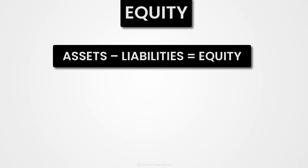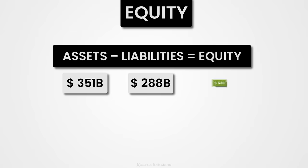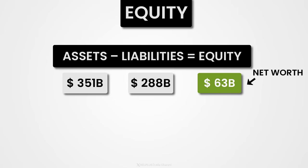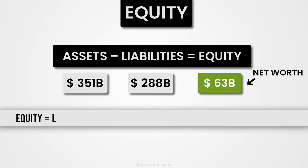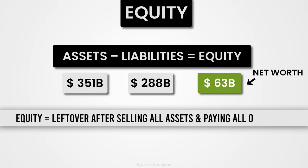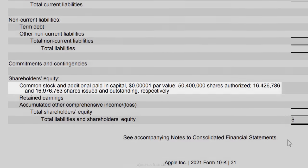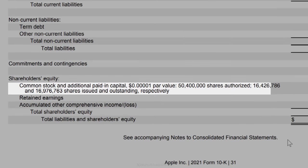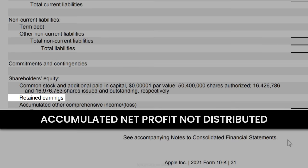Now let's move on to equity. It's important to understand that equity on its own doesn't really exist — it's the difference between assets and liabilities. In Apple's case, that's $351 billion in assets minus $288 billion in liabilities, which equals $63 billion in equity. This is Apple's net worth that belongs to the owners — what would be left if Apple sold all its assets and paid back all its debt. Equity mainly consists of money invested by the owners (common stock) and retained earnings — the net income accumulated over time that wasn't distributed to shareholders.